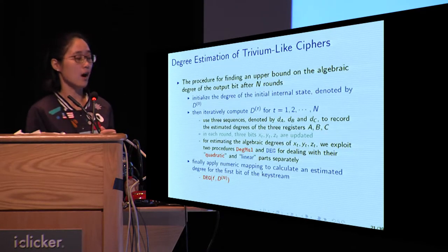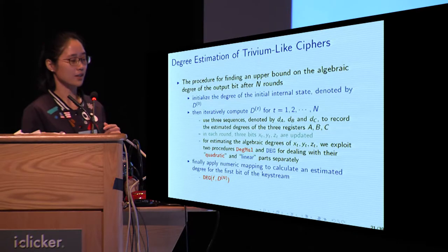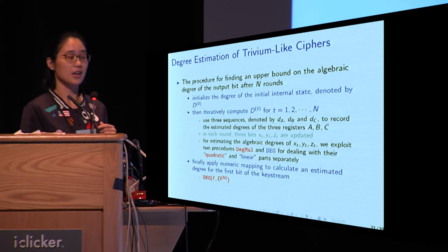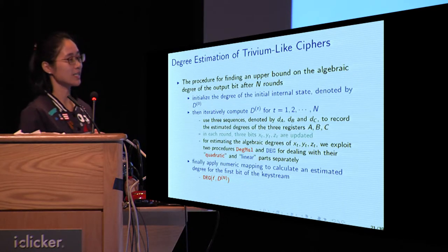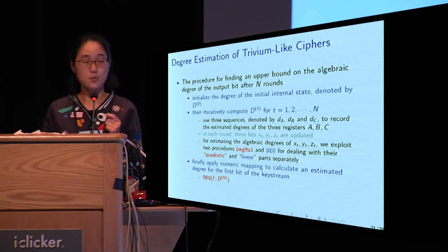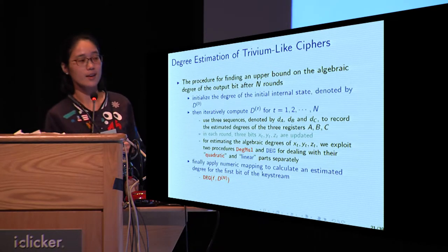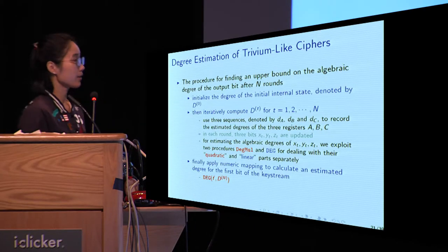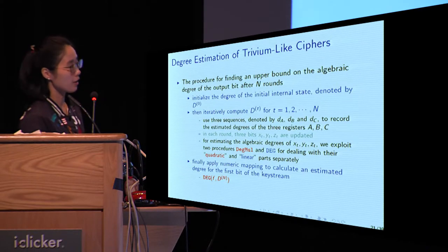The procedure for finding an upper bound on the algebraic degree of the output bit after N rounds proceeds as follows. First, initialize the degree of the initial state, denoted by D_0. Then, iteratively compute D_T for T from 1 to N. Finally, apply the numeric mapping to calculate the estimated degree for the first output bit. In the calculation of D_T, two procedures are used — DIGMAR and the numeric mapping — for dealing with the quadratic and linear parts separately.